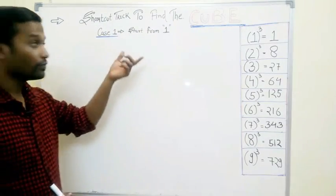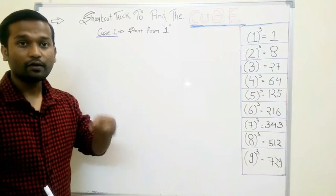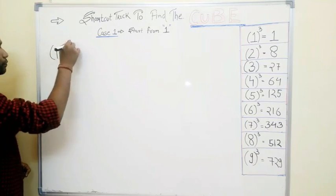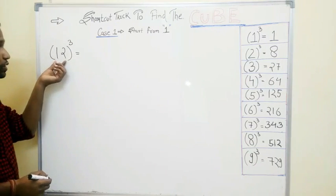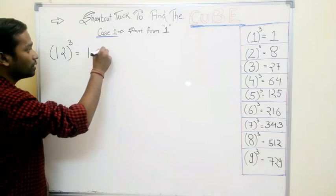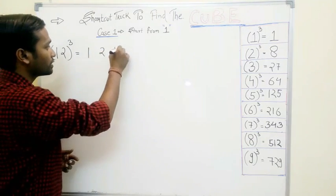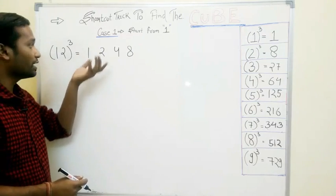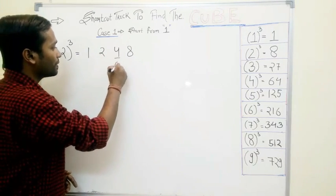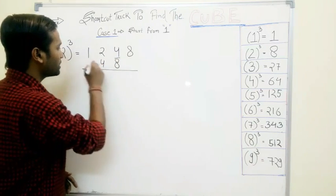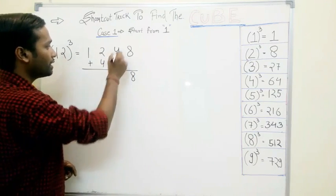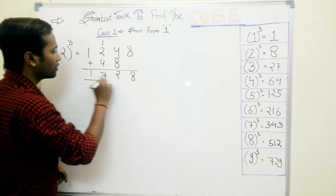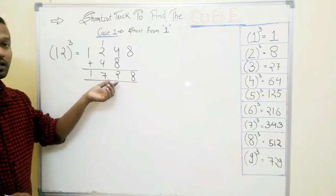Our first case covers numbers which start from 1, like 12, 13, 14, 15, 16, etc. Let's take example: 12 cubed. We have to write these two numbers from the left: 1, 2. Square this number — that is 4 — and cube this number — that is 8. Now we have to leave the extreme right and extreme left and double the center numbers. Simply add: 8, 12, 4 and 8 gives 12, carry 1, giving 3, 4, 7, and 1. So our answer is 1728.